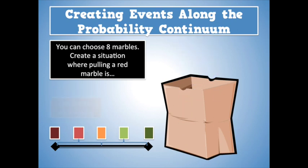What about a situation where it is neither likely nor unlikely? In this case, your red marbles and non-red marbles would have to be equal in number. So you'd have to have four red marbles and four non-red marbles. So in this case, I have four red and four blue.